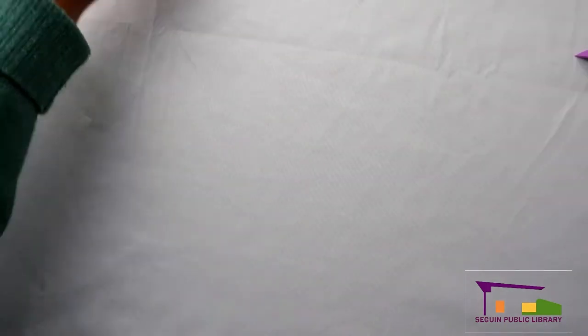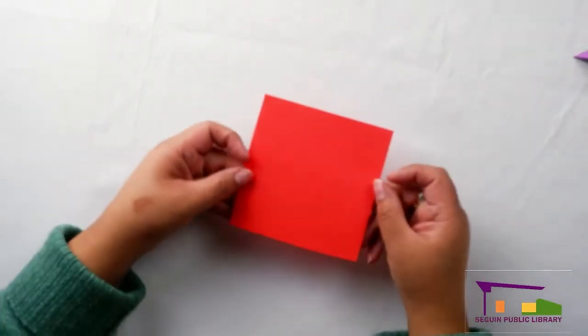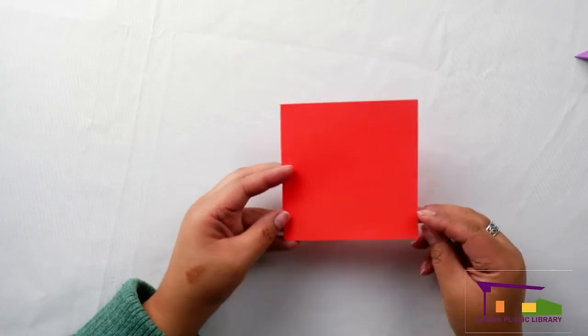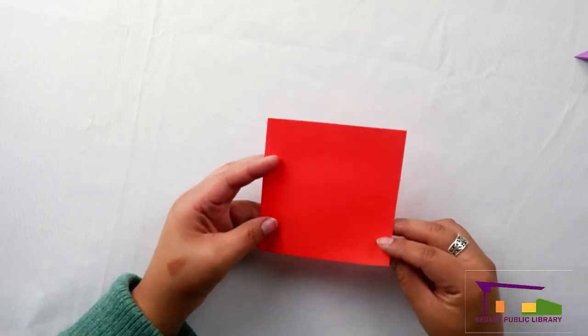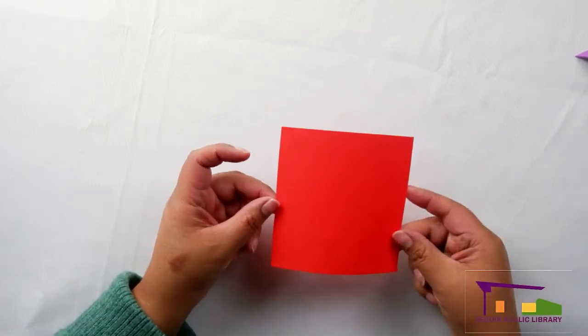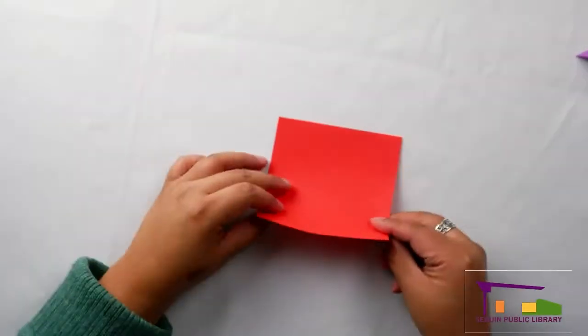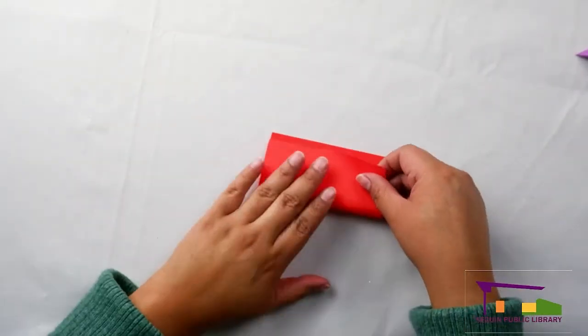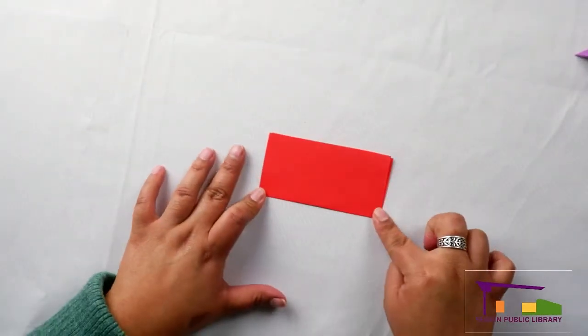So you start out with a 10 centimeter square of origami paper. You can use any kind of origami paper whether it's patterned or cardstock, this is just kind of a colored copy paper. And how you're going to do it is you're going to fold it in half and crease it down the middle.